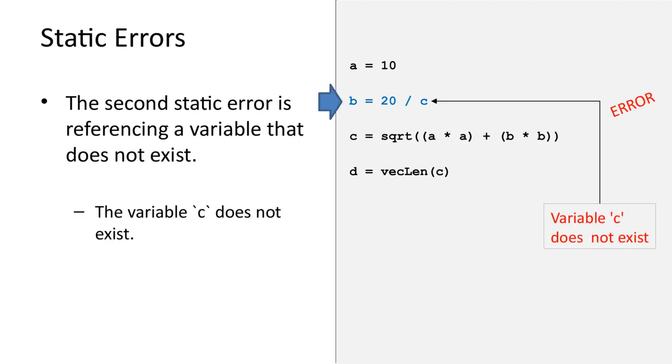The first error is in the second line of code. This is a static error. The error is because the variable c does not exist at that point in time. Variable c is only declared in the third line of code.